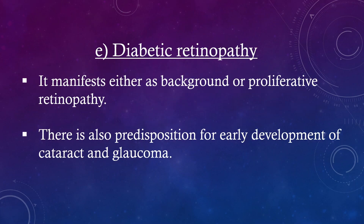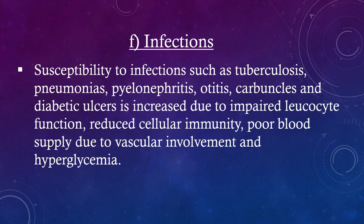Diabetic retinopathy manifests either as background or proliferative retinopathy. There is also predisposition for early development of cataract and glaucoma. Susceptibility to infections such as mycosis, pneumonias, pyelonephritis, otitis, carbuncles, and diabetic ulcers is increased due to impaired leukocyte function, reduced cellular immunity, poor blood supply due to vascular involvement, and hyperglycemia.